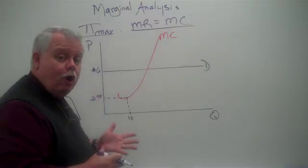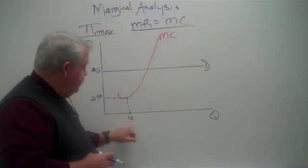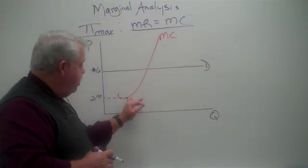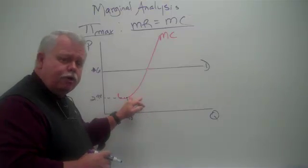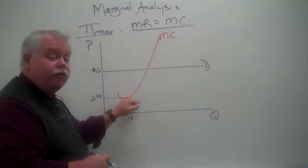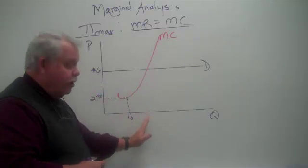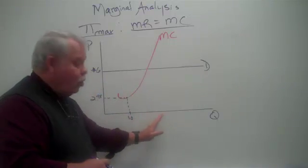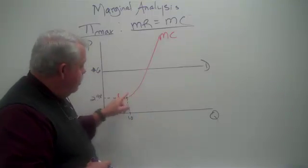That's the marginal cost of that unit. And as I produce another unit, I read up and what will I see? The marginal cost of the next unit increased slightly. And so on. As I continue production, the cost of each additional unit rises.